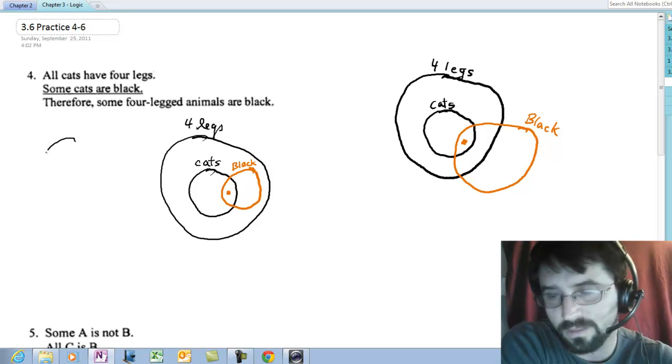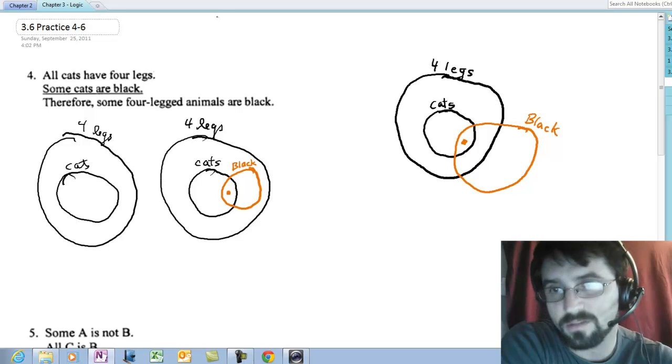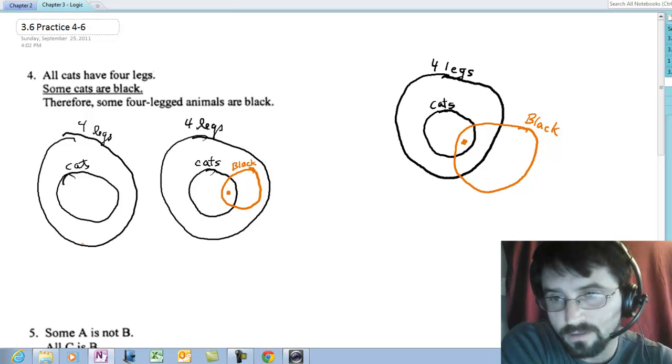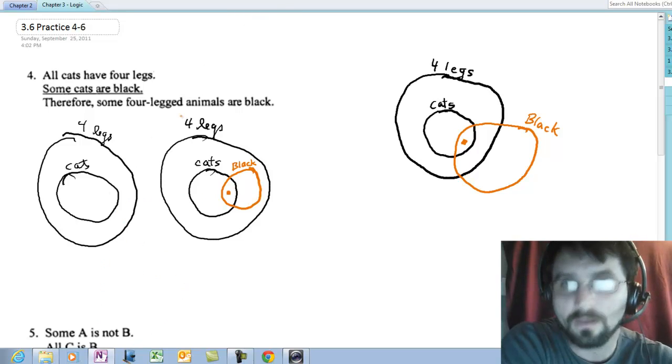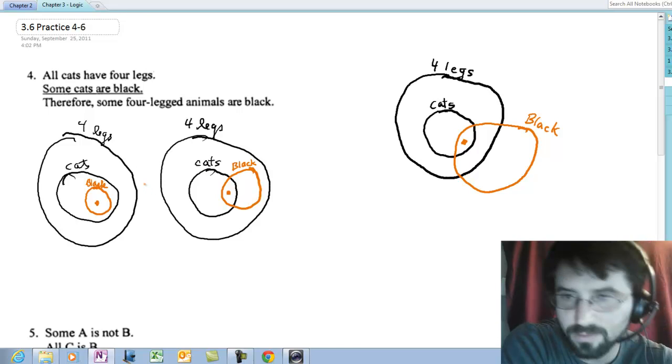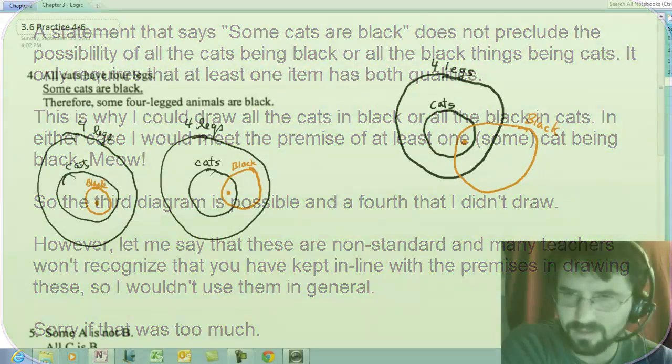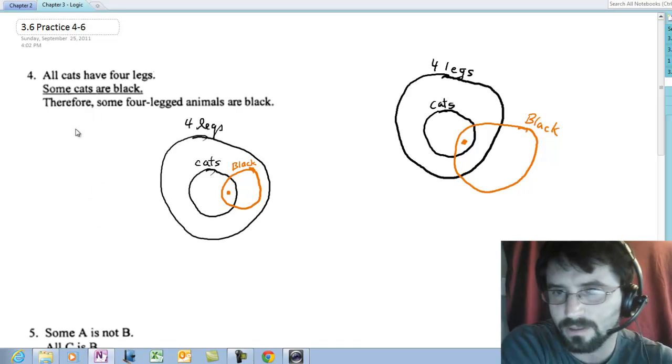Is there another way I could have drawn it? Yes. You draw four legs, you put cats inside it. And since I'm saying some cats are black, I could actually even do this. I could put black completely inside there and I could put at least one thing in there. That's kind of hard for most people to understand why that's also a possibility. So I'll leave this picture out.